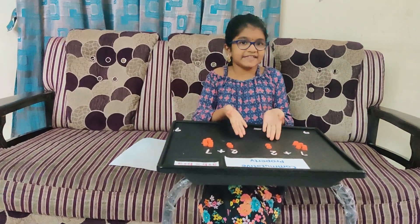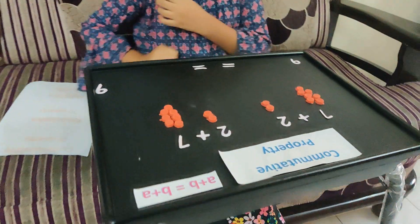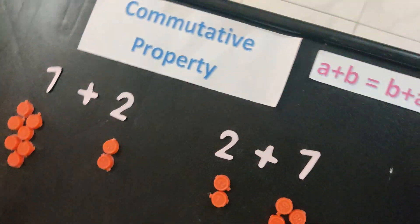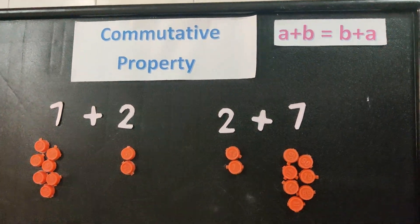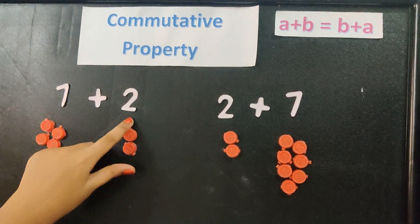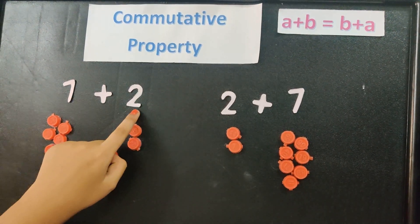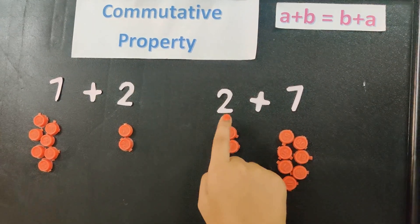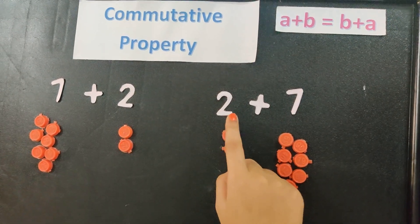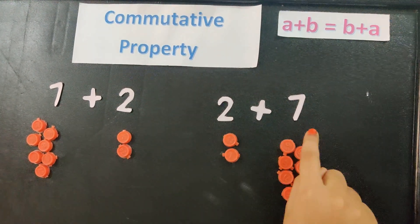Let's apply this knowledge here. I took two numbers, 7 and 2: 7 plus 2. Next, I changed the order of these numbers: 2 plus 7.